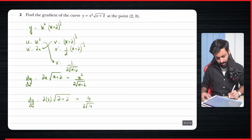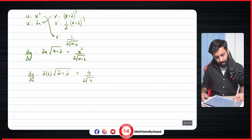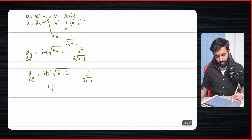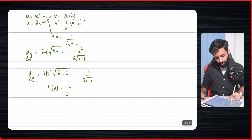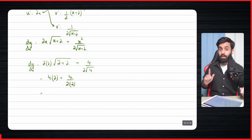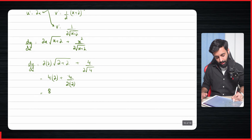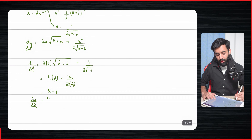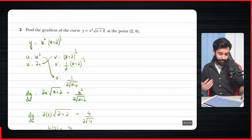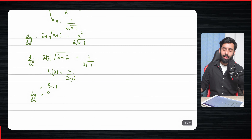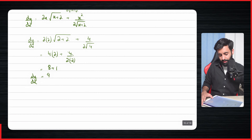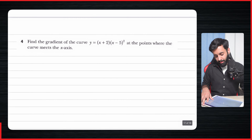Substituting x=2: 2·2·√(2+2) plus 2² over 2·√(2+2) equals 4·√4 plus 4 over (2·2) equals 4·2 plus 4/4 equals 8 plus 1 equals 9. So the gradient of the curve at the point (2, 8) is 9, which is the correct answer.